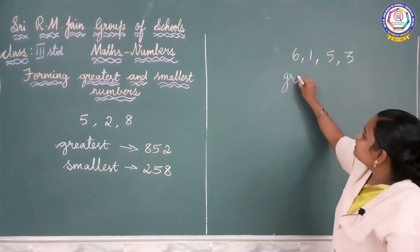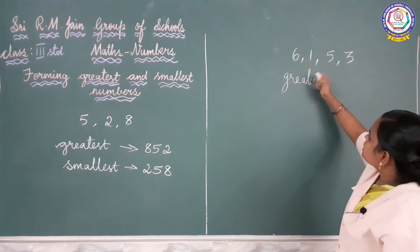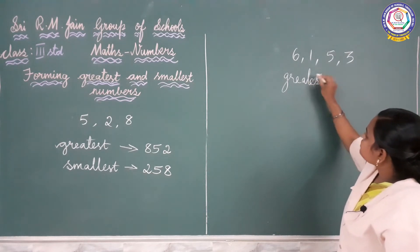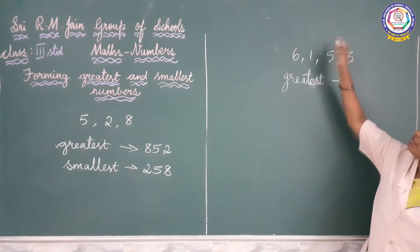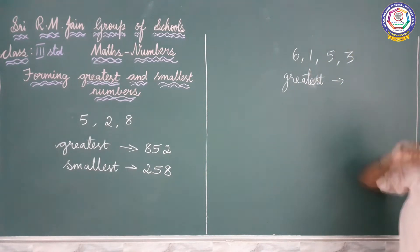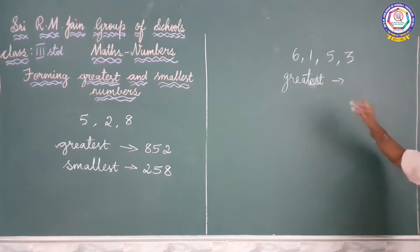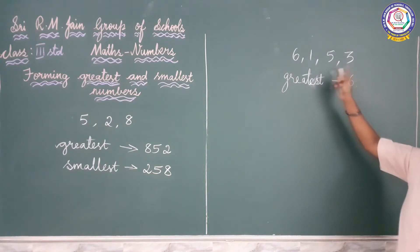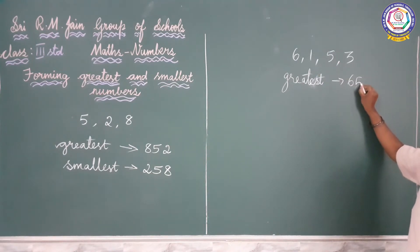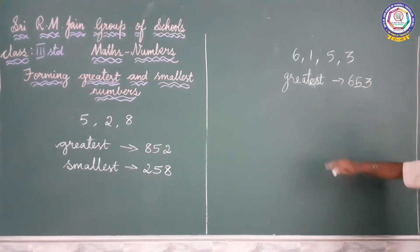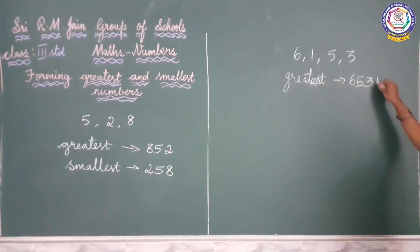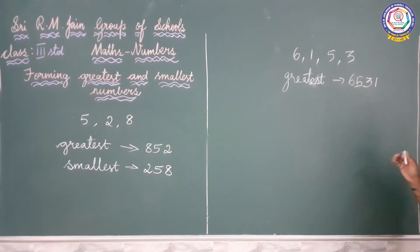First we will find out the greatest 4-digit number. So 6, 1, 5, 3 — which is the greatest number here? 6 is the greatest number. Next, which is the greatest number from 1, 5, 3? 5 is the greatest number. Next you compare 1 and then 3 — which is the greatest number? 3. The remaining number is 1. So the greatest 4-digit number is 6531.